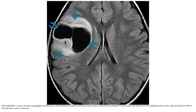In a six-year-old with a ganglioglioma, we see a mixed solid and cystic region involving the frontal lobe with extension to the underlying white matter. Approximately 25–50% of gangliogliomas will have a cystic component.